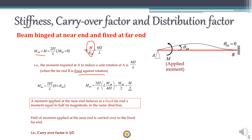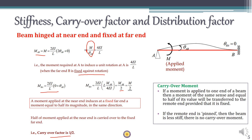Substituting the value of theta_AB back into the slope deflection equation for M_BA, we find that M_BA equals half of M_AB. So when the far end is fixed, half of the moment applied at the near end is carried over to the far end. This phenomenon is called carry-over, and the carry-over factor is always 1/2 when the far end is fixed. The carry-over moment acts in the same direction as the near end moment. If the far end is pinned, there is no carry-over moment.